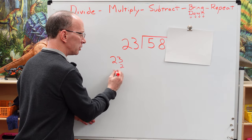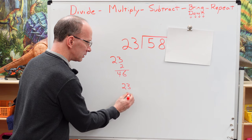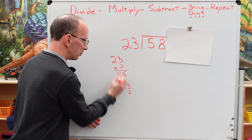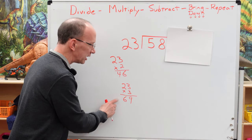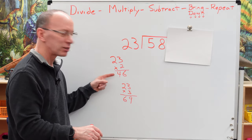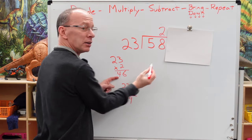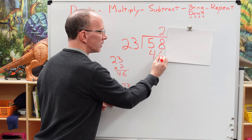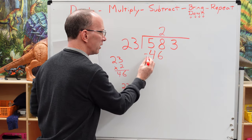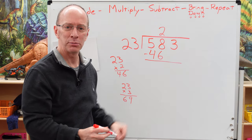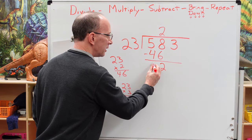23 times 2: 3 times 2 is 6, 2 times 2 is 4 — that's 46. That's still a little low. Let's see what 23 times 3 is: 3 times 3 is 9, 3 times 2 is 6 — that's 69. Oh, that's too much. Drop it down to 46. So 23 times 2 — put the 2 right there, 2 times 23 is 46. Now let's do some subtraction: 8 minus 6 is 2, 5 minus 4 is 1.